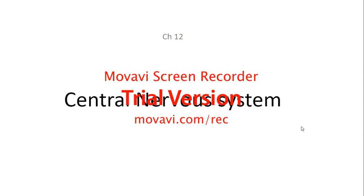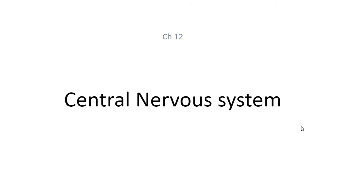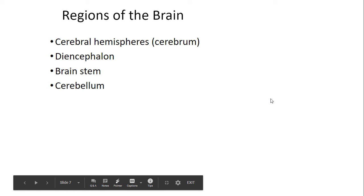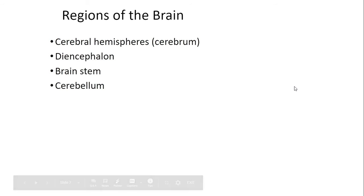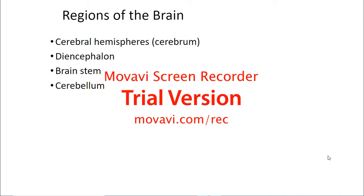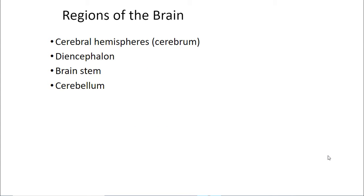Good afternoon, class. Today we will be discussing the central nervous system, and I hope a lot of this material is a review because we have already talked about the central nervous system in lab. The central nervous system consists of the brain and spinal cord, and we will be spending the majority of the time discussing the brain. There are different regions of the brain that have different functions that we will be discussing.